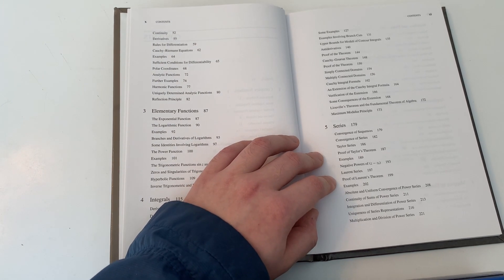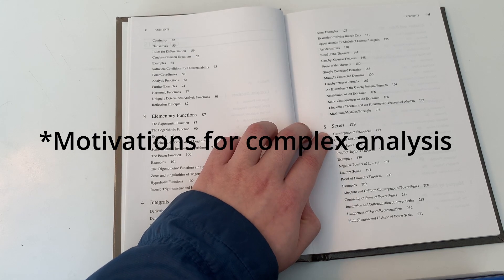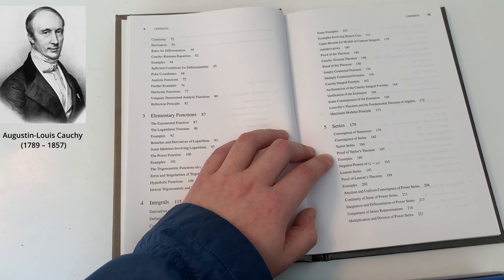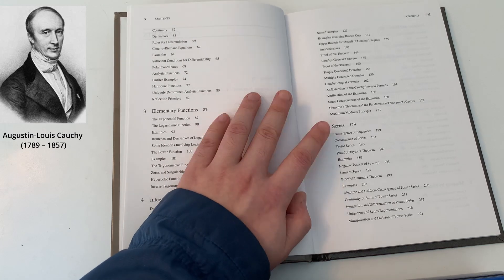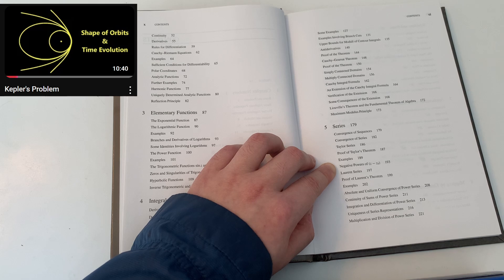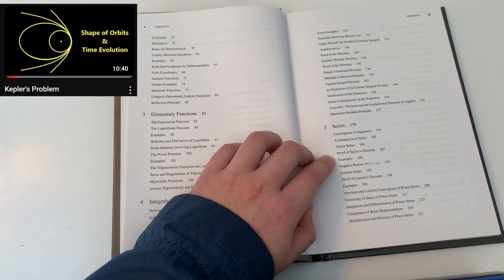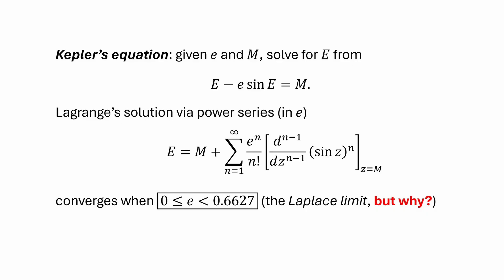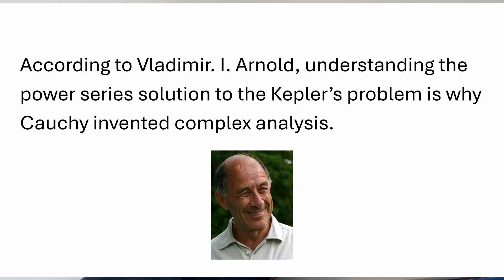One of the original motivations was to understand the behavior of power series. I think it was Cauchy who invented much of the material in our course when he was investigating a solution to Kepler's problem. The series solution to Kepler's problem has a very strange behavior — it only converges for a limited range of eccentricities. It is a highly esoteric problem by today's standard, but this is how complex analysis, and really modern analysis in general, kick-started.